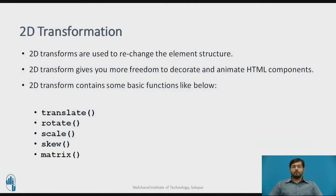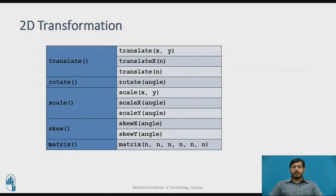Now, moving forward to 2D transformations. 2D transformations are used to re-change the element structure. 2D transformation gives you more freedom to decorate and animate style components or HTML components. 2D transforms contains some basic functions like translate, rotate, scale, skew and matrix. We will see all these elements have some values to be passed. We will see and elaborate.